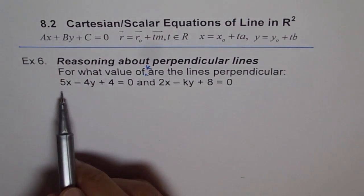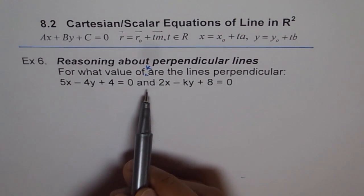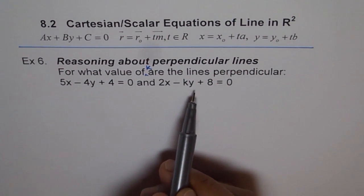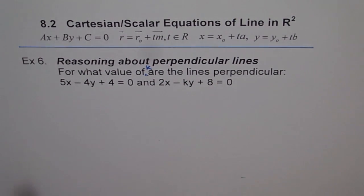So we are given 5x minus 4y plus 4 equals to 0 and 2x minus ky plus 8 equals to 0. Now from this, these are the lines in Cartesian form, right?